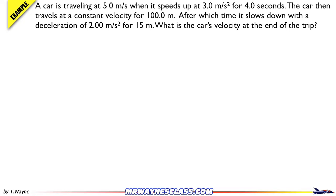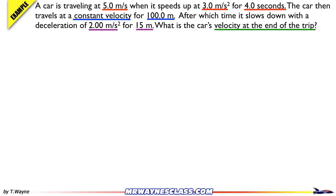Looking at the unit and phrase clues, I can see 5 meters per second, 3 meters per second squared, and it does this for 4 seconds — so there is one acceleration at 3 meters per second squared. The car then travels at a constant velocity, meaning acceleration equals 0, for 100 meters. After that it slows down with a deceleration of 2 meters per second squared for 15 meters. We're looking for the car's velocity at the end of all this motion.